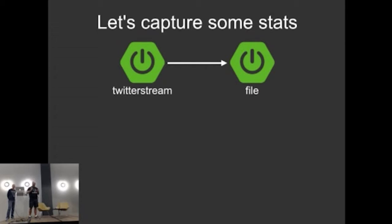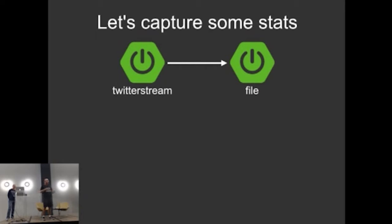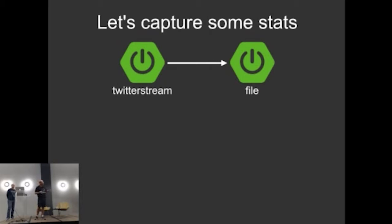We're going to pick on Twitter. I want to create an app called Twitter Stream, and I want to get all the data from Firehose — I'm going to pay for access from Twitter to get Firehose. I'll get all the data coming off Twitter from the start of the game at 5 p.m. all the way through post-game. I want to store all that data for historical purposes — just to a file in this case. It could be HDFS, a relational database, whatever. But I'm going to store it to file.